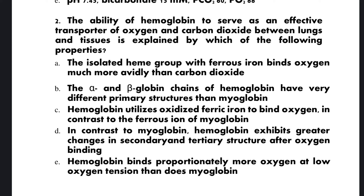Question 2: The ability of hemoglobin to serve as an effective transporter of oxygen and carbon dioxide between lung and tissue is explained by which of the following properties?